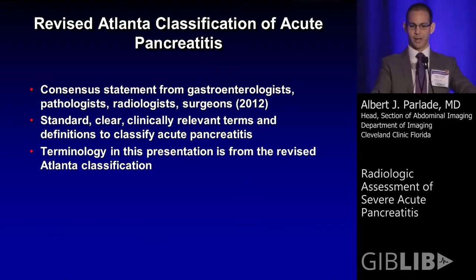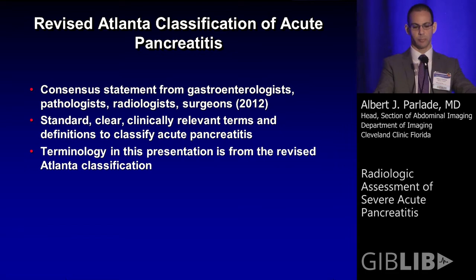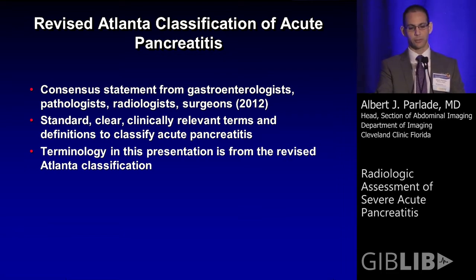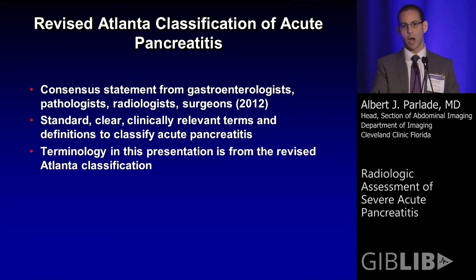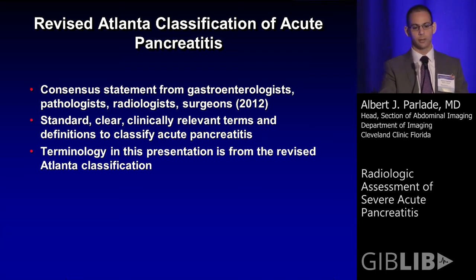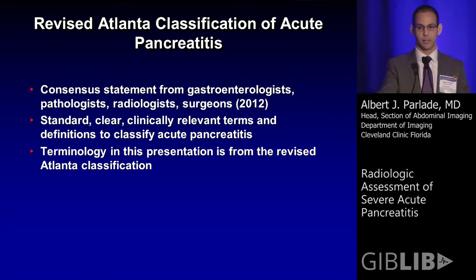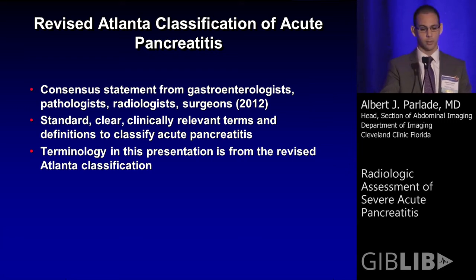I want to start with the revised Atlanta classification for acute pancreatitis. The most important thing when imaging and discussing pancreatitis is that everyone is on the same page with the nomenclature and terminology, so we can communicate appropriately and appropriate management can be made. In 2012, a consensus group of gastroenterologists, pathologists, radiologists, and surgeons updated the Atlanta classification and came up with new, clear, clinically relevant terms to define pancreatitis, necrotizing pancreatitis, and the various collections. Everything I discuss in this presentation is from the revised Atlanta classification.